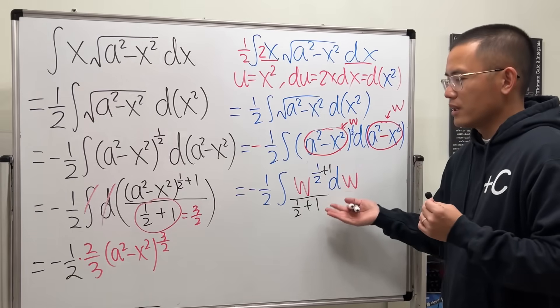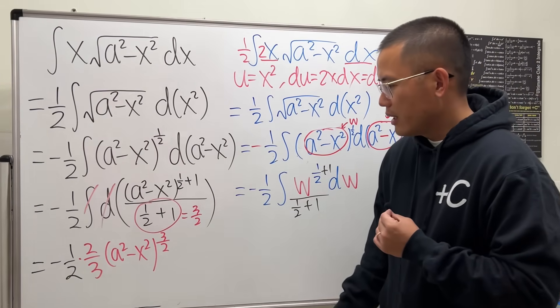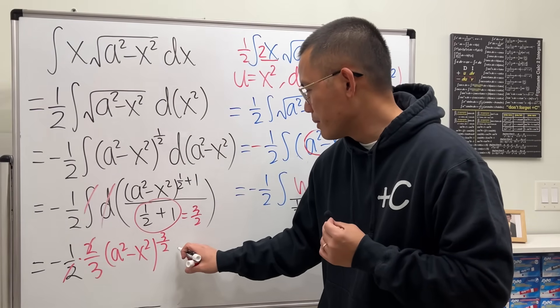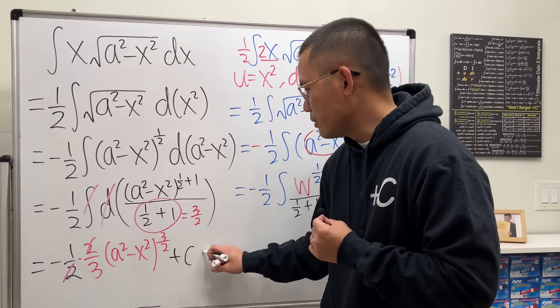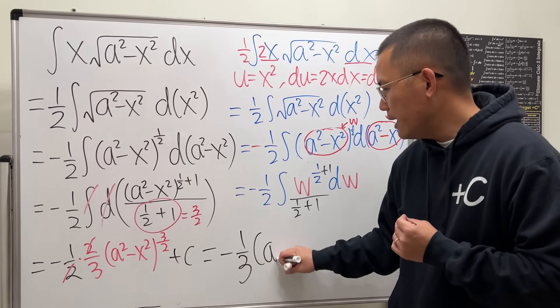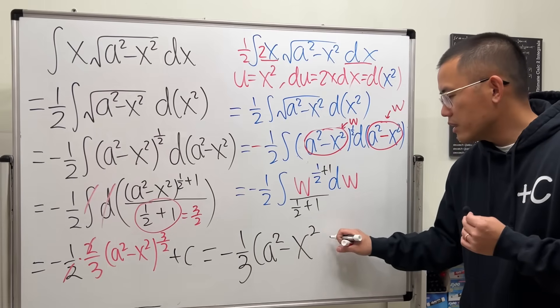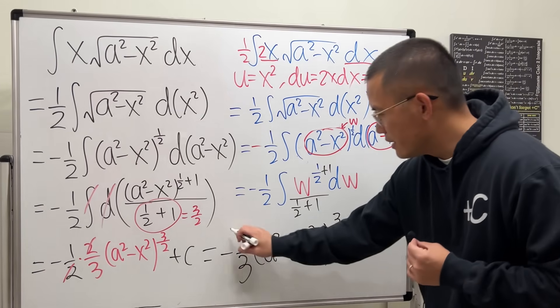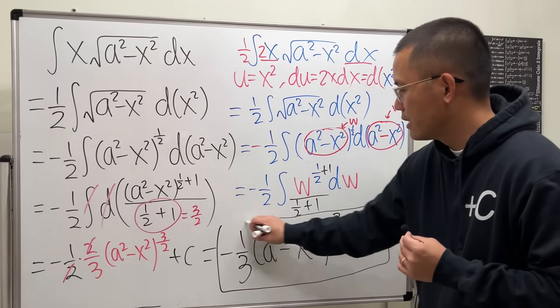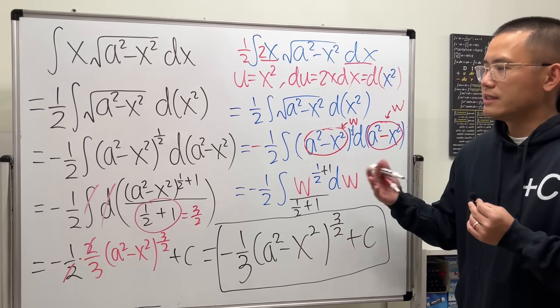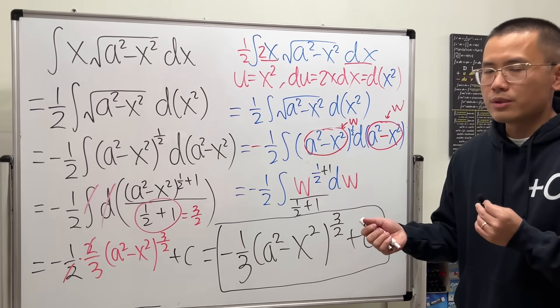That's exactly what you will get if you do it like this way too. And now, of course, cancel stuff out. And then you can put a plus c. Doesn't really matter. Let's say negative 1 over 3, a squared minus x squared to the 3 over 2 power plus c. Right? So yeah, you can just treat this as like a different style of writing out the u substitution.